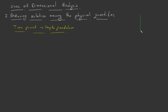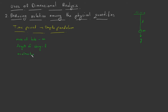A simple pendulum consists of a bob and a string. Let the mass of the bob be m and the length of the string be l. The time period of a simple pendulum may depend on the mass of the bob m, the length of the string l, and also acceleration due to gravity g, which acts downward. So there may be three factors which can affect the time period of a simple pendulum.